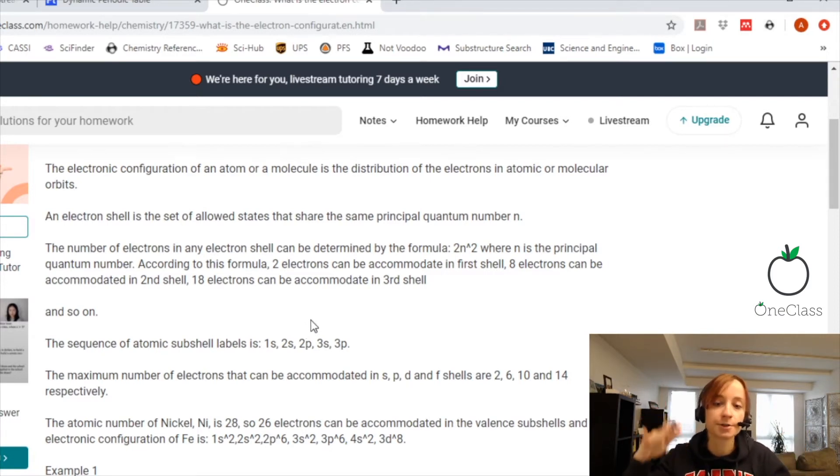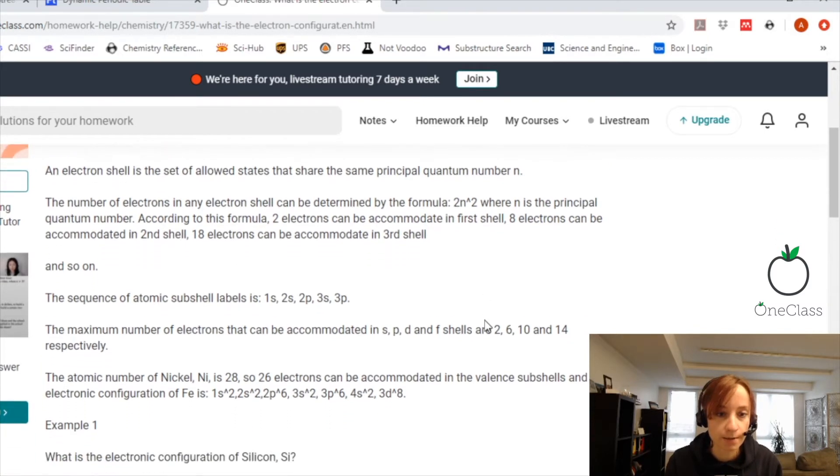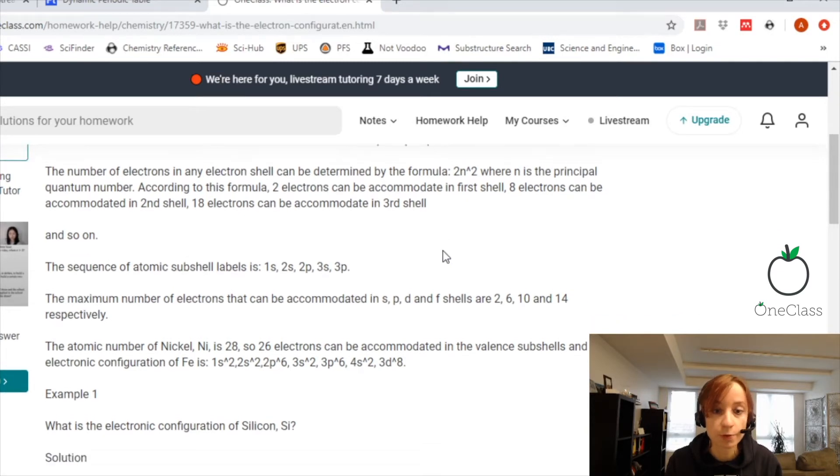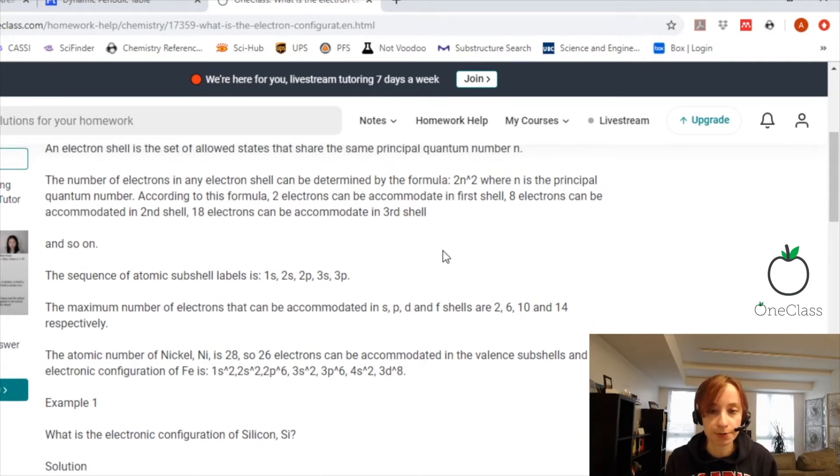There are hierarchies of orbitals. An electron shell is the set of allowed states that share the same principal quantum number. The number of electrons in any shell can be determined by the formula 2n², where n is the principal atomic number. According to this formula, you can have two electrons in the first shell, eight in the second shell, and 18 in the third shell.